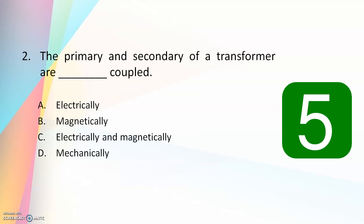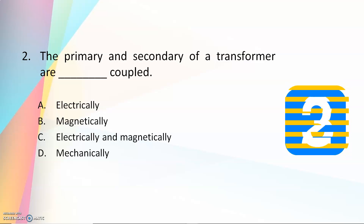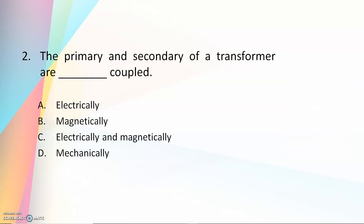The second question: the primary and secondary of a transformer are dash-coupled — electrically, magnetically, electrically and magnetically, or mechanically. The answer is magnetically coupled.